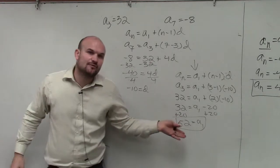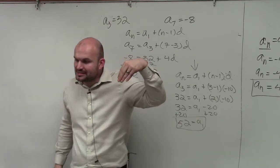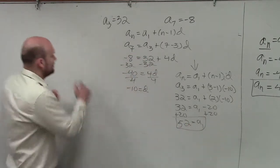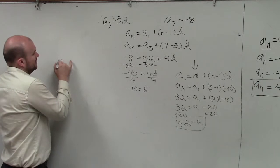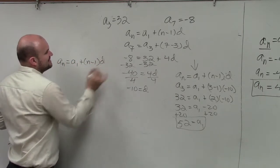So now, we know what a sub 1 is, and we know what d is. The last question that they're asking is to identify the explicit formula. So again, we go back to our explicit formula. a sub n equals a sub 1 plus n minus 1 times d.